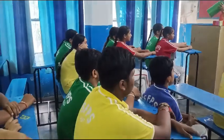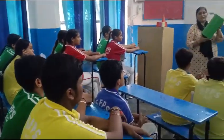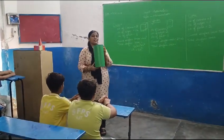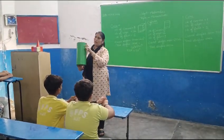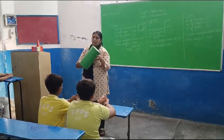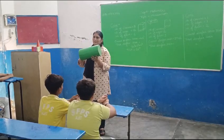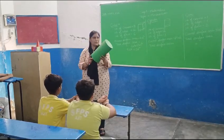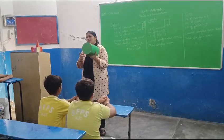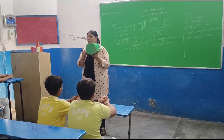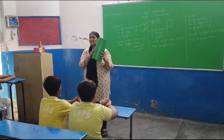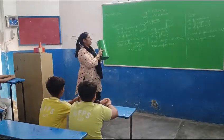Now, on to the cylinder. How many corners does it have? Zero — no corners. How many edges does it have? Two. This is the first edge, and this is the second edge. The number of faces are three. The shapes of the faces are: this face is a circle, this face is a circle, and this face is a rectangle.